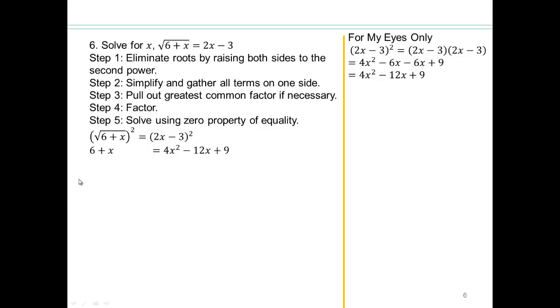6 plus x equals 4x squared minus 12x plus 9. We can't solve until you have 0 on one side. So subtract, bring 0 on one side, and now factor. So let's bring, for my only column, 4x squared minus 13x plus 3.